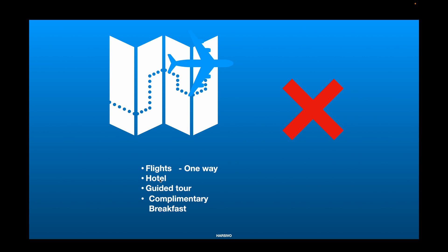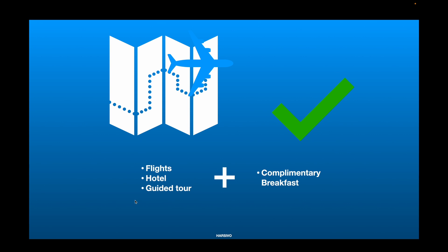This is breaking the Open-Closed Principle because the basic functionality has been opened for modification, which is not acceptable. To comply with the principle, the tourist company should not touch their basic package — which includes flights, hotel, and guided tour. If they want to add complimentary breakfast they should offer it as an add-on for new customers without touching the old package. That is how you follow the Open-Closed Principle.